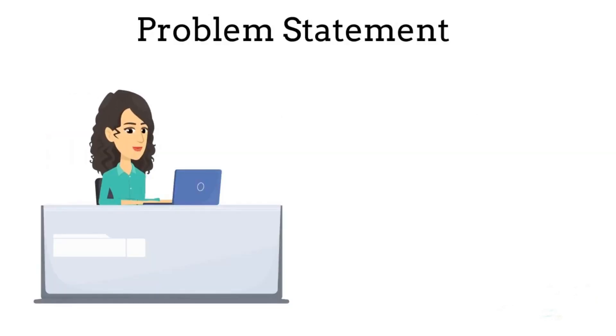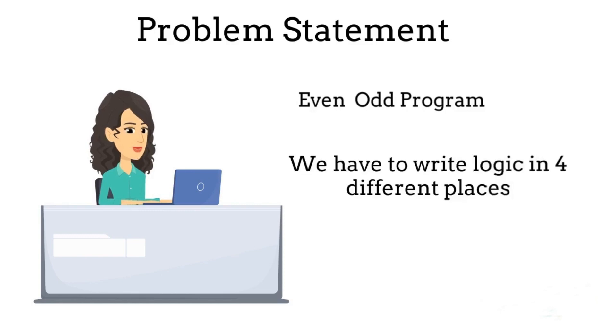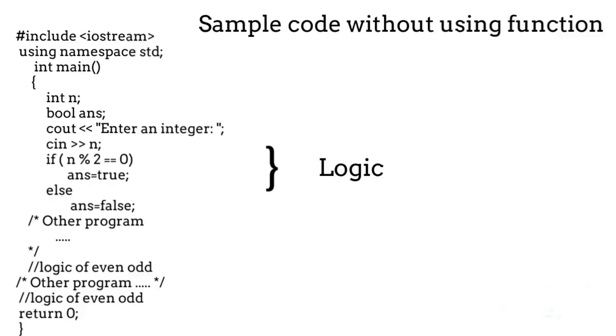Let's see how functions can simplify a program. Consider a program where we want to find out if a number is even or odd, and we want to check it in four different places in the program. Normally, if we don't know the concept of functions, we will write the logic for the even-or-odd check in four different places.